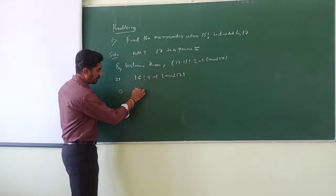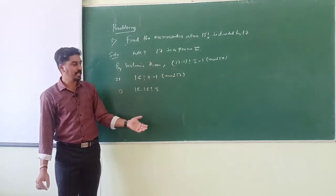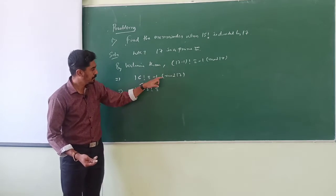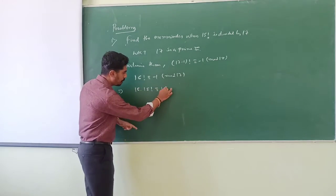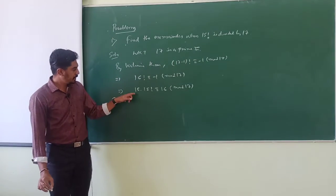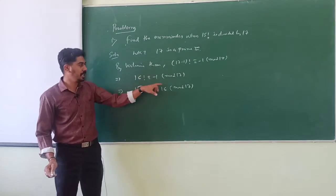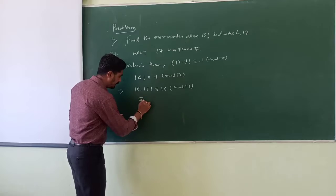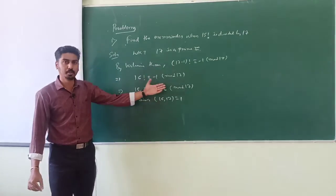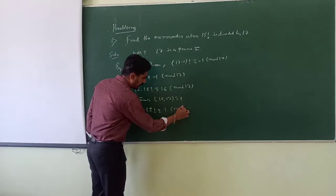We write 16! as 16 · 15! ≡ minus 1 (mod 17). Since we are working mod 17, we can add 17 to minus 1 to get 16. So 16 · 15! ≡ 16 (mod 17). Since GCD(16, 17) = 1, we can cancel 16 on both sides, giving 15! ≡ 1 (mod 17).